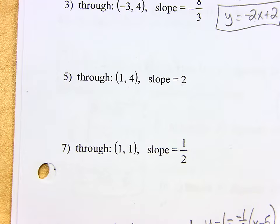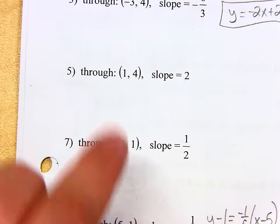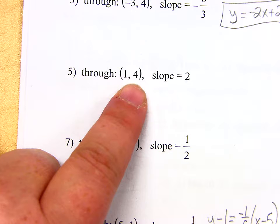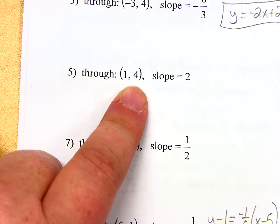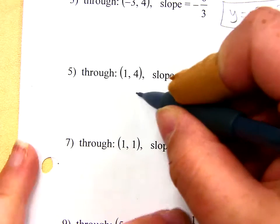Here we go. So we're taking a look at number 5 first. We have to give slope intercept form of the line with this slope and this point. So if I have a point and a slope, I have to use point slope form.